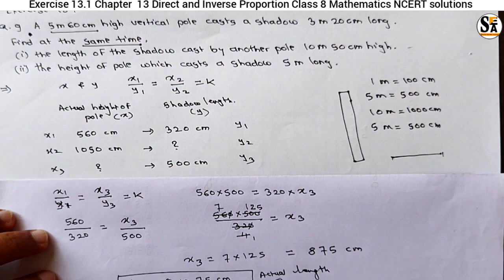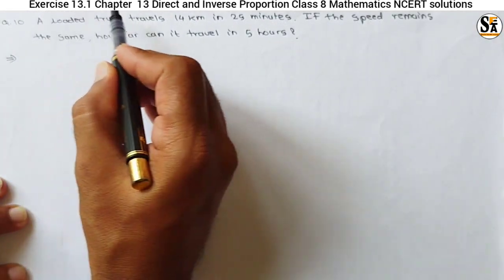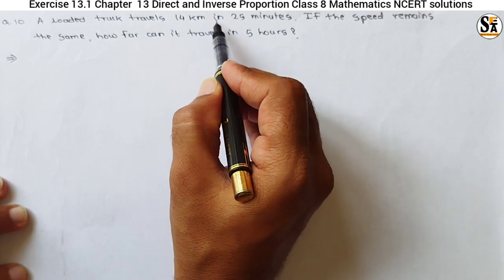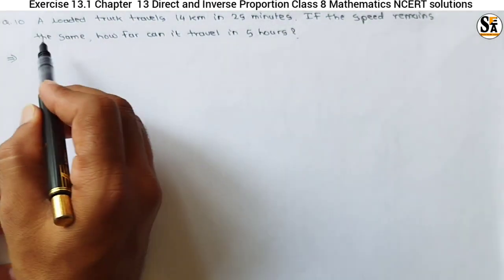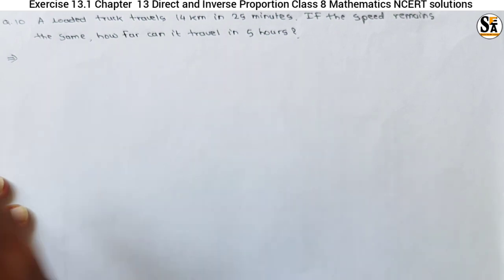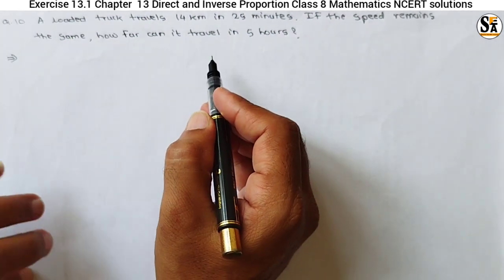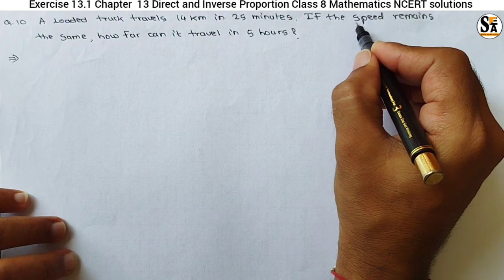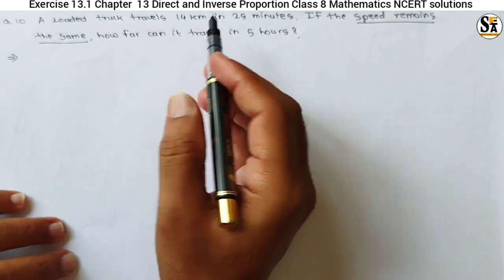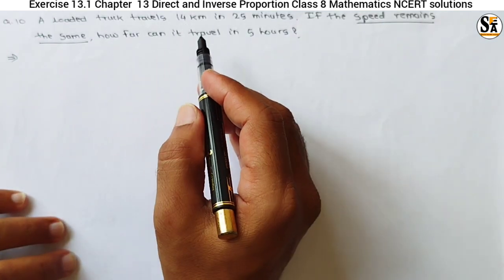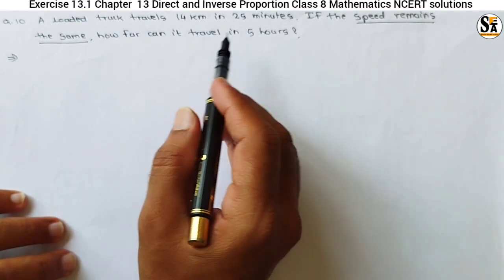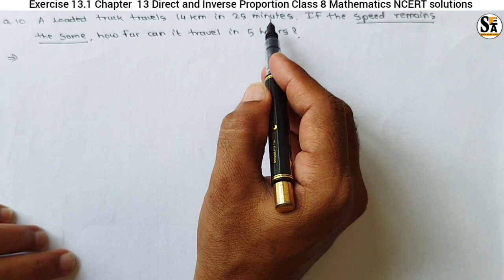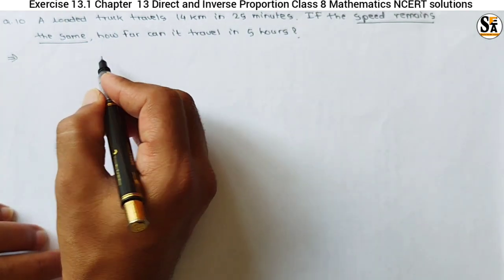See question number 10 of exercise 13.1, chapter Direct and Inverse Proportion, class 8 mathematics. Question: a loaded truck travels 14 kilometers in 25 minutes. If the speed remains the same, how far can it travel in 5 hours? Again, this is a direct proportion example. If the speed remains constant — this is very important — if time increases, distance also increases. So this is a simple example of direct proportion.